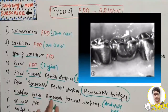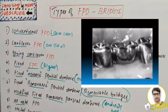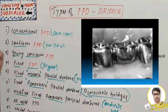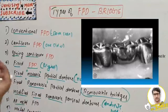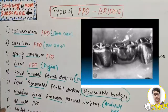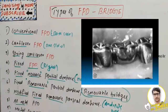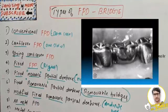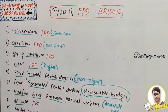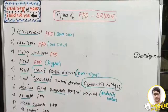All-metal FPDs are fabricated using only metal. They are indicated for replacing maxillary and mandibular posterior teeth, where aesthetics is not a concern. They have maximum strength and durability, which is important since masticatory forces are mainly concentrated on the posterior teeth.